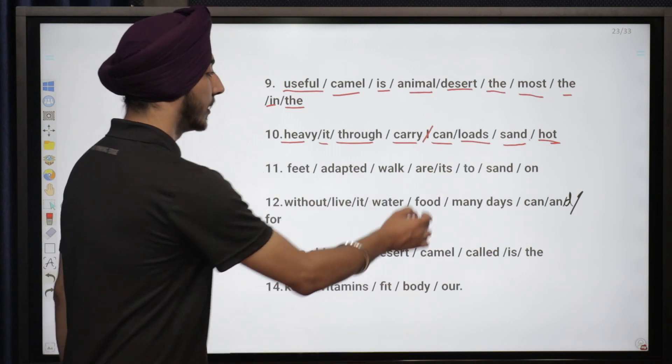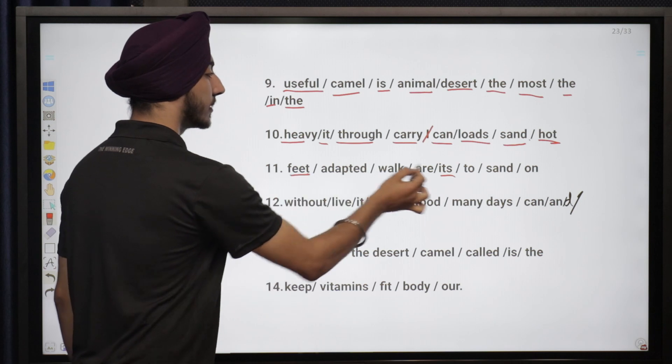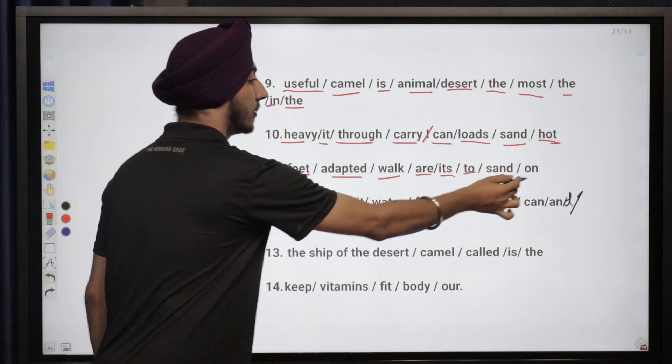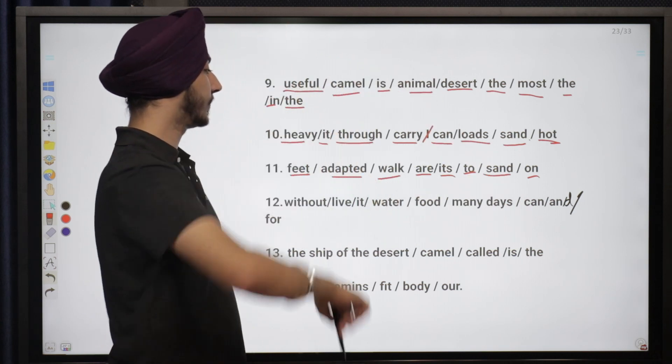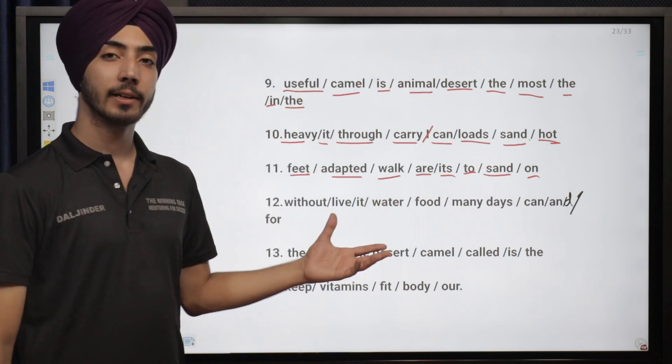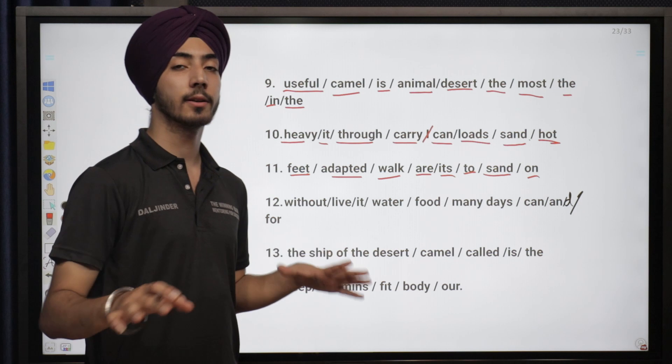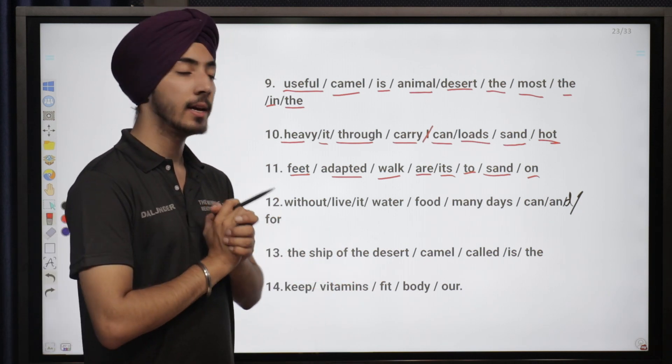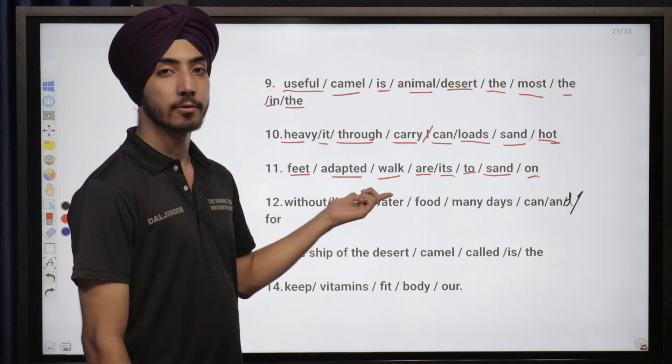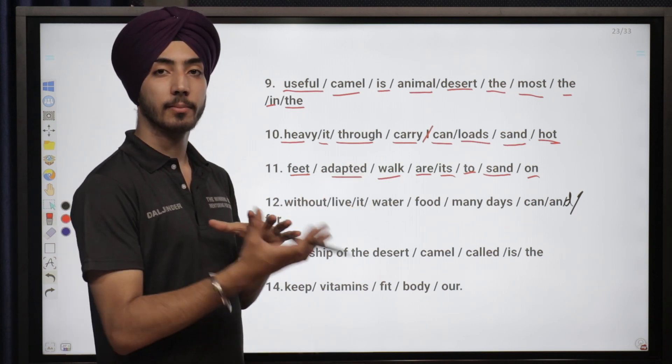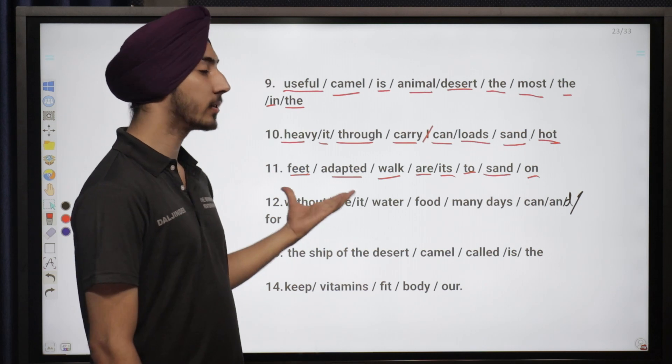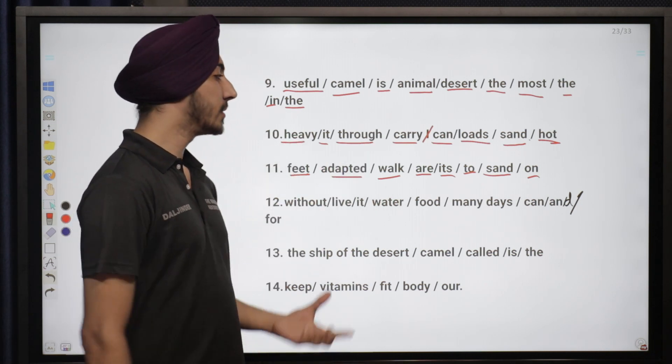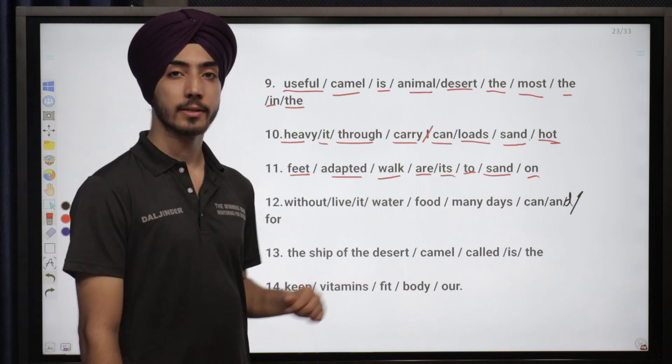What is the meaning of adapted? Adapted means when we change with respect to our surroundings, then we say we have adapted to it. So maybe we are talking about the camel. The camel's feet are big feet because it has to walk in the sand, so its feet are adapted to walk on sand.